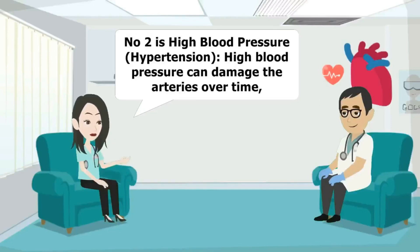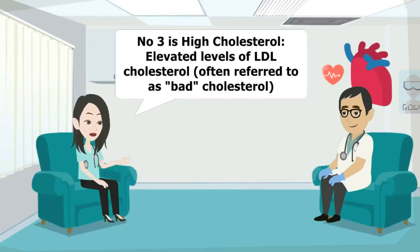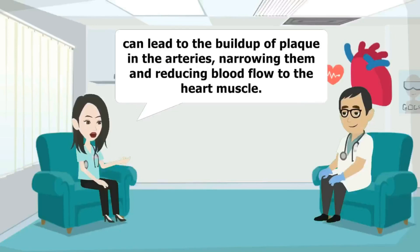Number two is high blood pressure, or hypertension. High blood pressure can damage the arteries over time, making them more susceptible to atherosclerosis and increasing the risk of blood clots that can trigger a heart attack. Number three is high cholesterol. Elevated levels of LDL cholesterol, often referred to as bad cholesterol, can lead to the buildup of plaque in the arteries, narrowing them and reducing blood flow to the heart muscle.